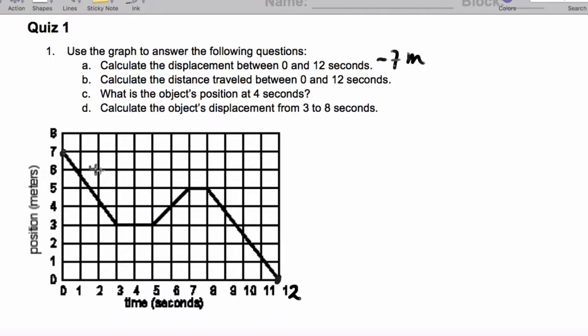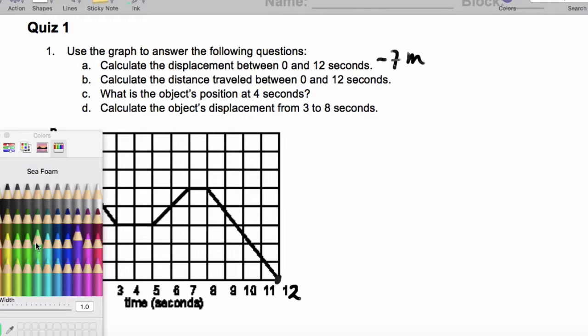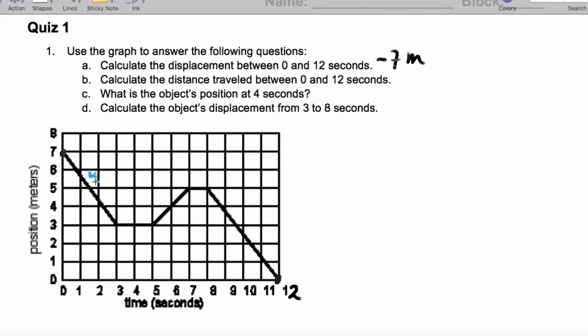The distance traveled between 0 and 12 seconds - I'm going to do this in a different color. So we travel 4 meters here, not at all here, 2 meters here, 0, and then we go from 5 to 0 here, so we cover another 5 meters there. So we actually end up covering 4 plus 2 plus 5.